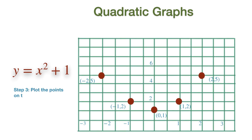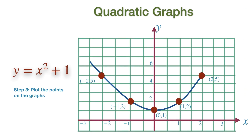In step 3, you would need to plot these points on graph paper by choosing a suitable X and Y axis and joining them with a smooth parabola curve.